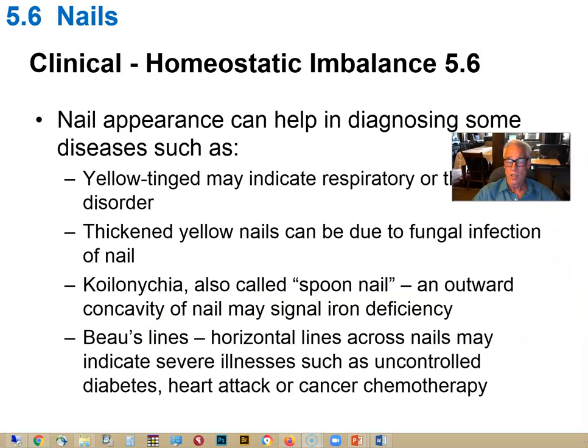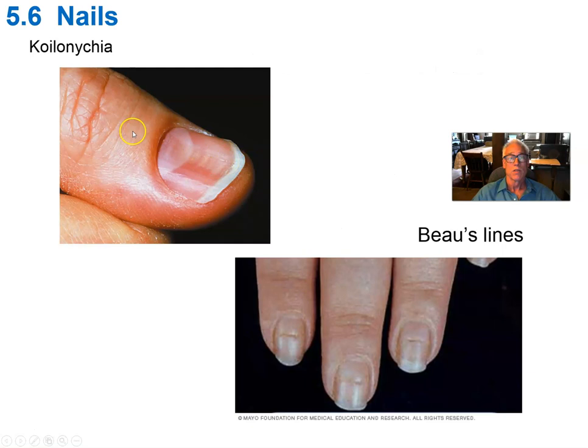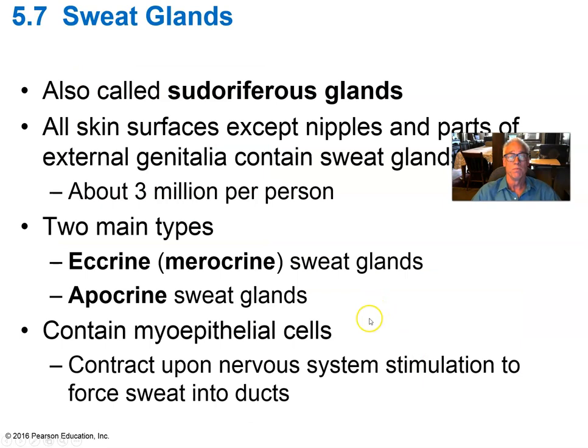Beau's lines in nails are possibly the result of some interference or interruption in the growth of the nail matrix, such as after a heart attack, a severe disease, a cancer treatment, or diabetes. Here's an illustration of that concavity of koilonychia and Beau's lines of interruption of the nail. Sometimes if there's periodic treatment, such as cancer chemotherapy, there may be a row of these indentations or white lines in the nail.